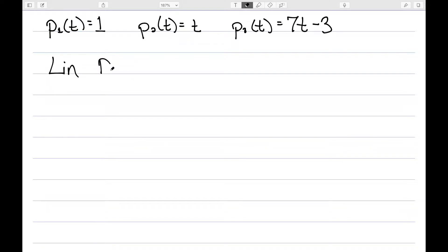These polynomials are linearly dependent. That's because I can write p3 as 7 times p2 minus 3 times p1. So I was able to write the third polynomial as a linear combination of the other two.